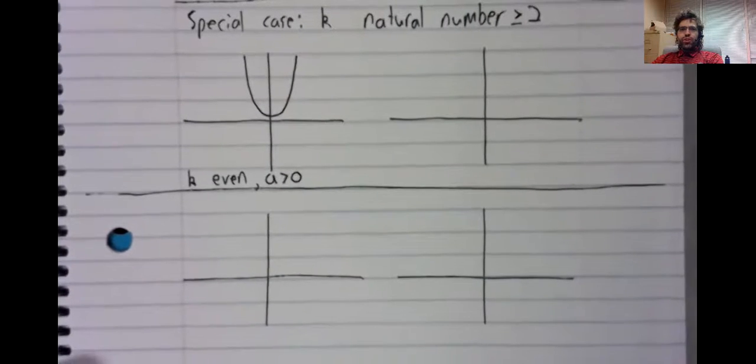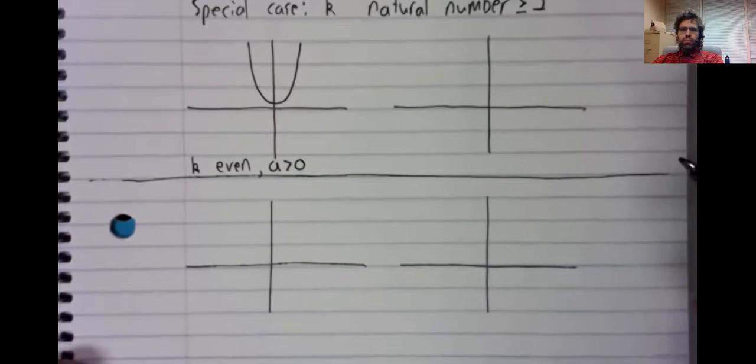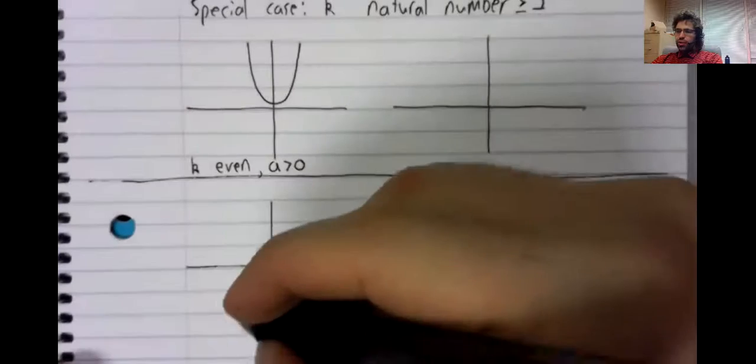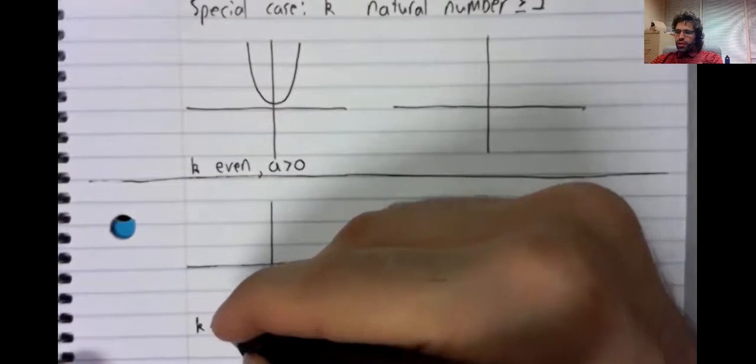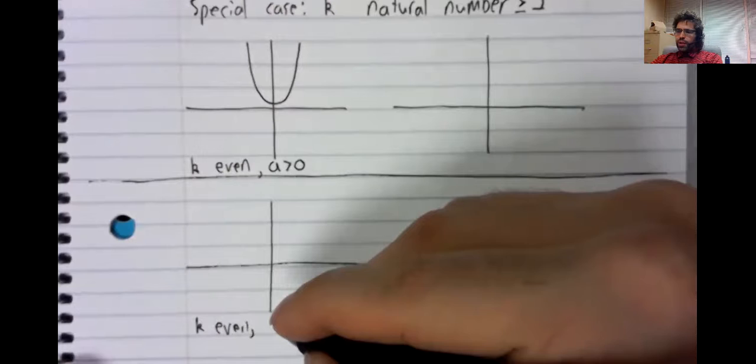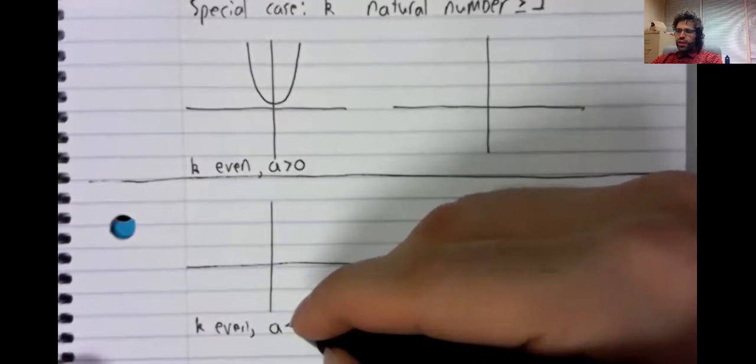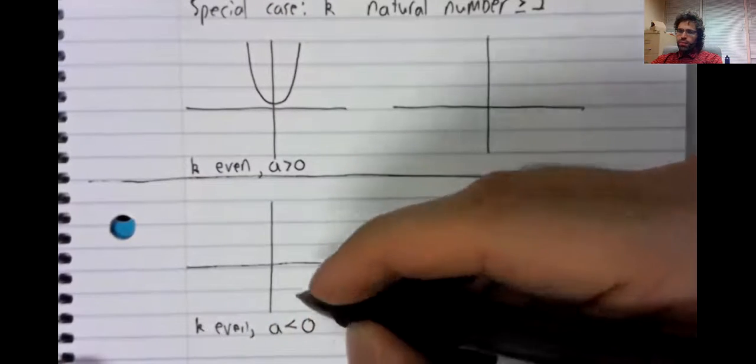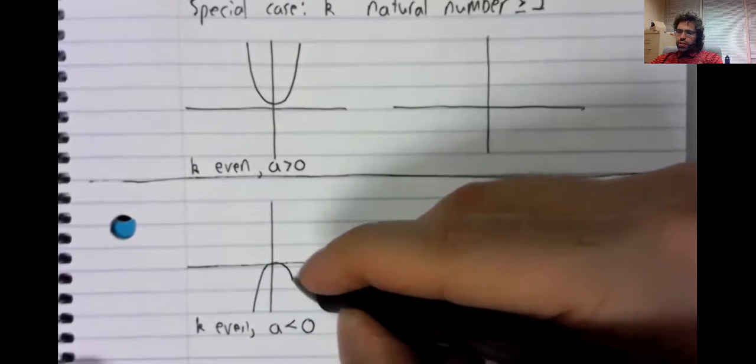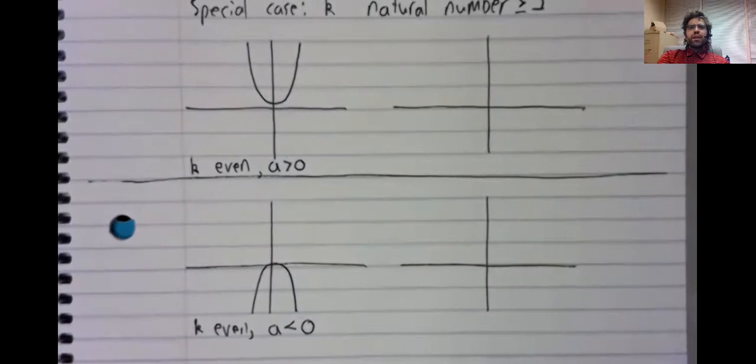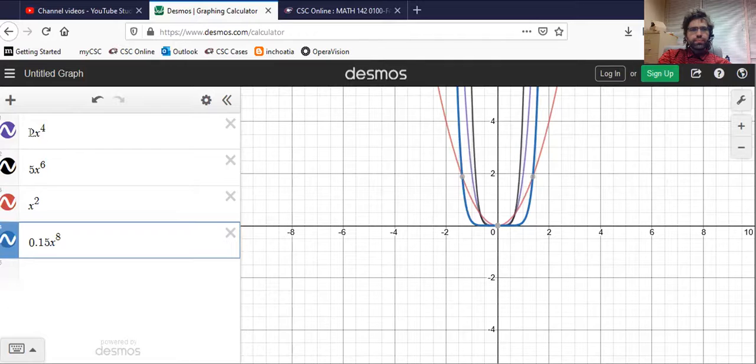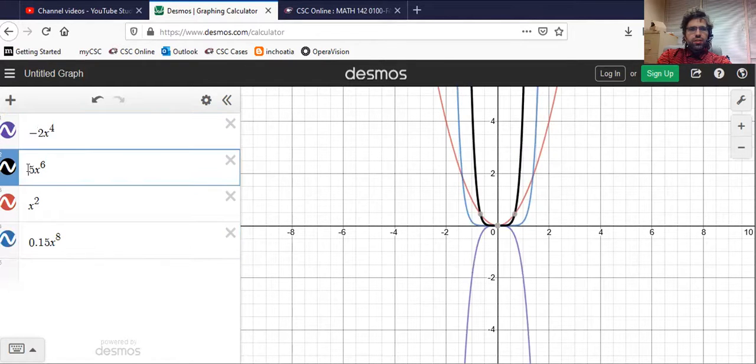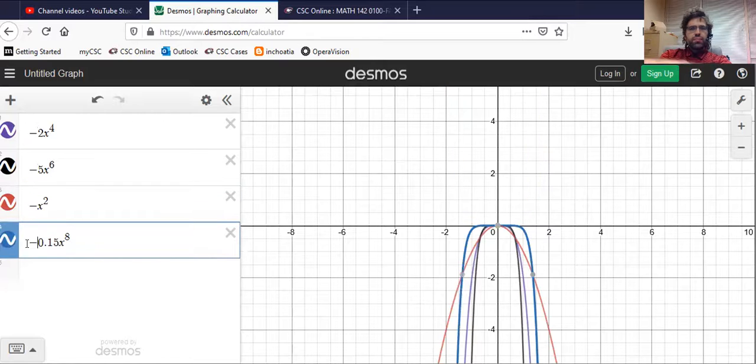And we should know from previous material that if we take a graph and we multiply it by a negative number... Let's go back to Desmos. And yes, indeed. If we make those negatives, our graphs look like this.